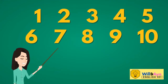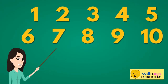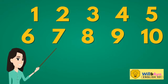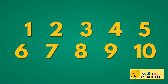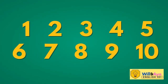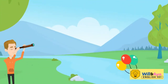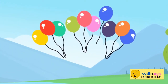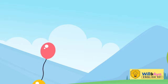One, two, three, four, five, six, seven, eight, nine, ten. Let's count faster: one, two, three, four, five, six, seven, eight, nine, ten. Great! Now let's count the balloons. Can you count with me? One — there is one balloon.